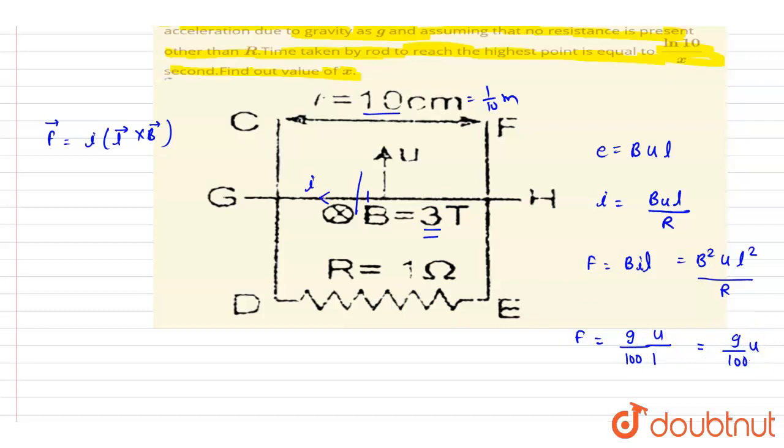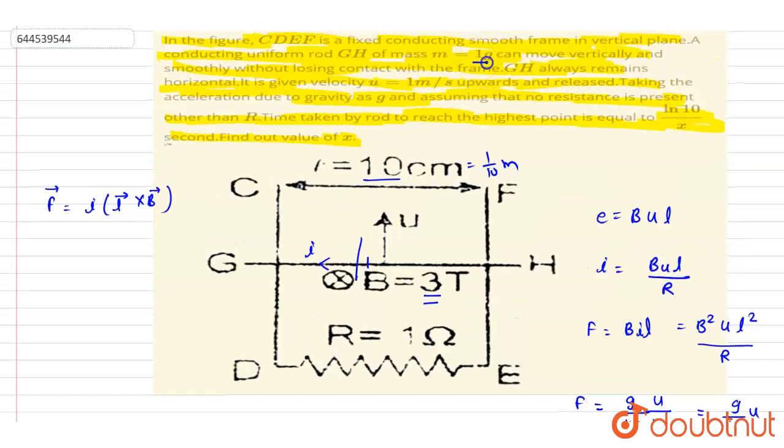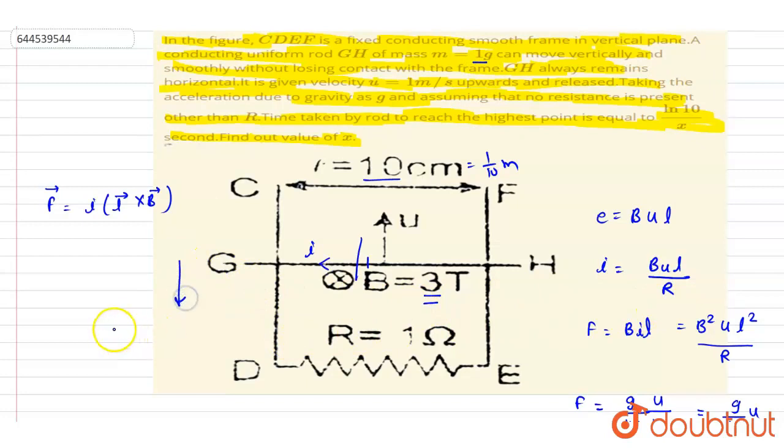So it will be 9/100 times u divided by R. And if you see here, the mass is 1 gram, right? So the mg here will act in downward direction. It will be 10 to the power minus 3 kg into g, so it will be 10 to the power minus 2 newton.